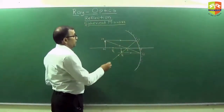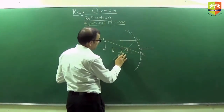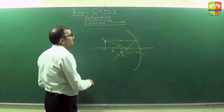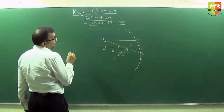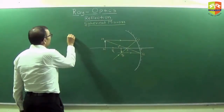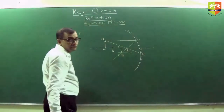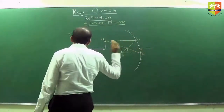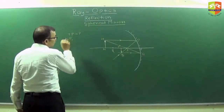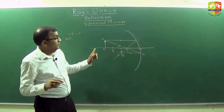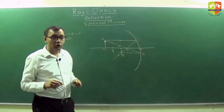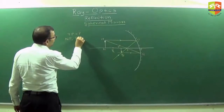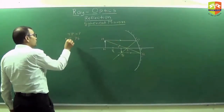Now I want to find out the distance TP. I want to know what TP is. What is given? NP is known. What else is known? Some property of the mirror — the focal length. So PF is also known. I want TP in terms of NP and PF.